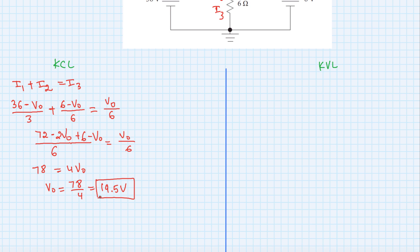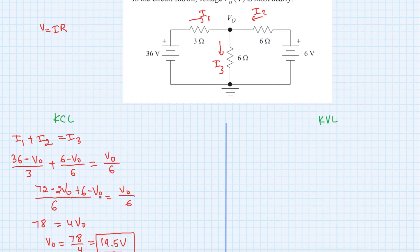That's KCL — not too bad, straightforward. Current entering equals current leaving the node, then you just solve your equation. In an exam setting, without explanation, this would probably take me two to three minutes.